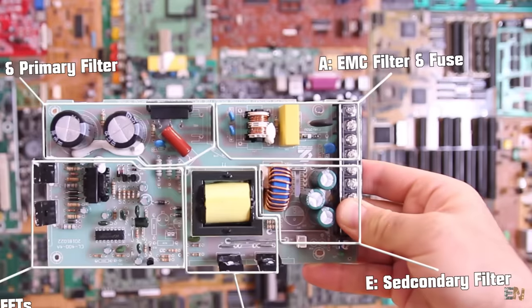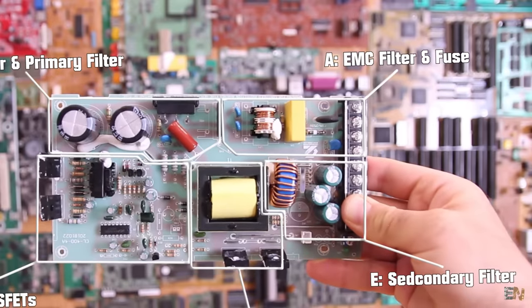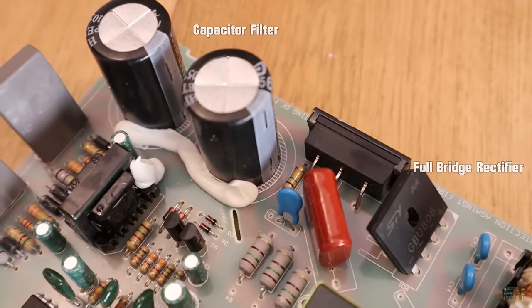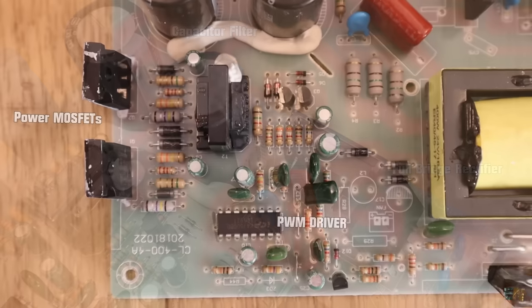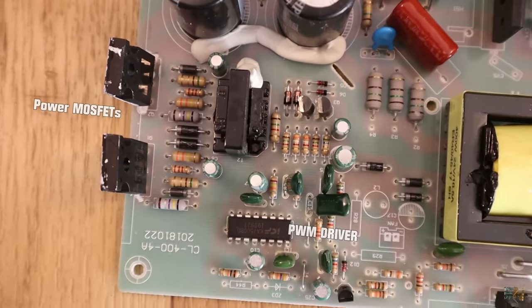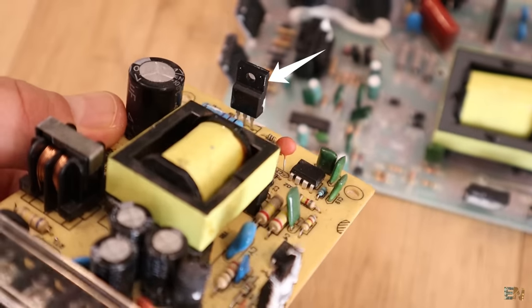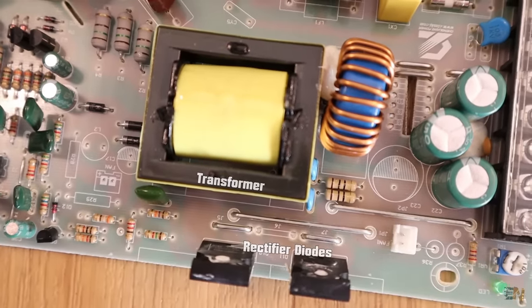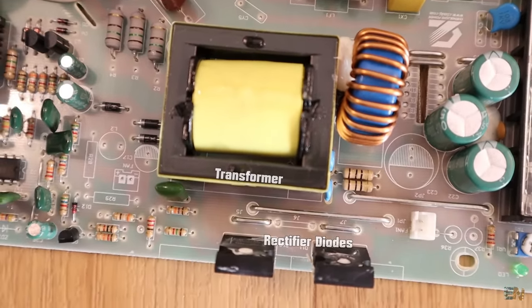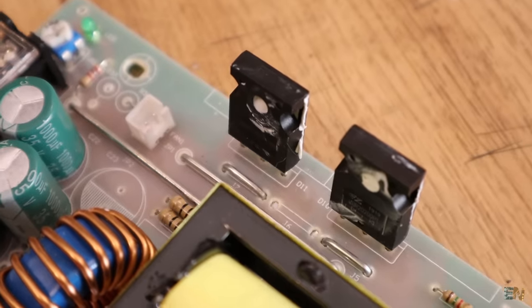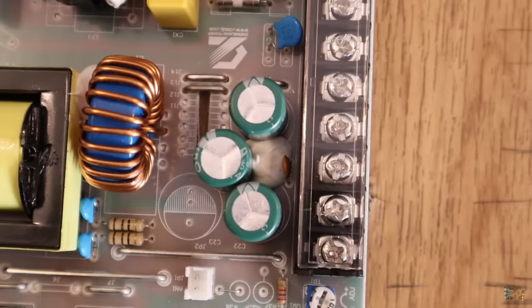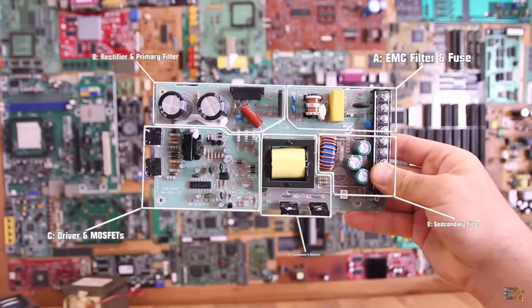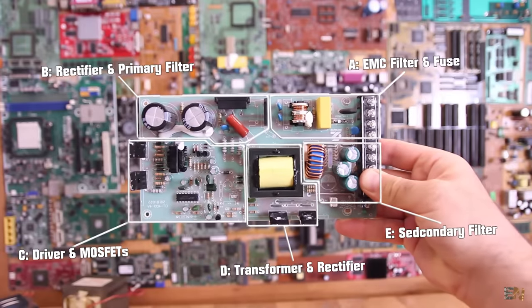These supplies would usually have 5 parts as you can see here from A to E. A is the main input protection and filter. B is the full bridge rectifier together with the primary filter of the supply. The C part are the switching transistors. Usually we use two but sometimes it's just one. Part D is the transformer which this time is a lot smaller than a linear power supply. Together with this transformer we have the second rectifier diodes. And finally part E is the output filter coil and capacitors and also the feedback. Now let's talk about each part separately, starting with block A.